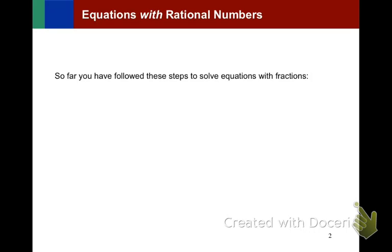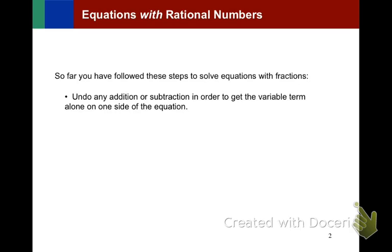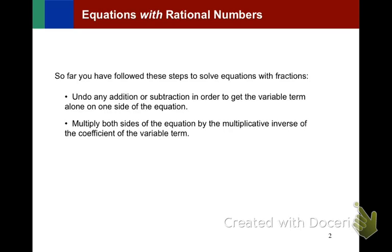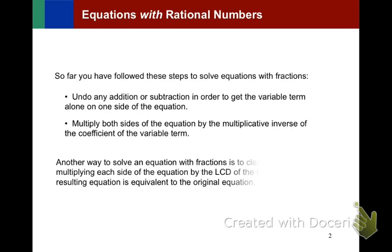So far, we've followed these steps to solve equations with fractions. You undo any addition or subtraction to isolate the variable, and then you multiply both sides by the multiplicative inverse of the coefficient or fraction. Another way to solve these types of problems is to clear the fractions by multiplying each side of the equation by the lowest common denominator of the fractions. This results in an equation that is equivalent to the original equation.